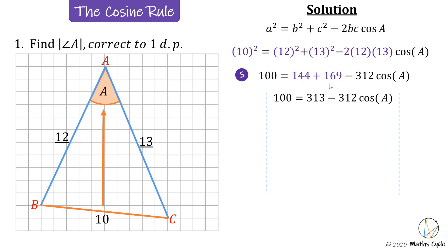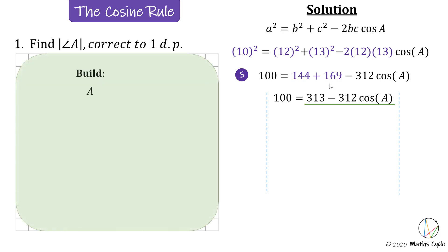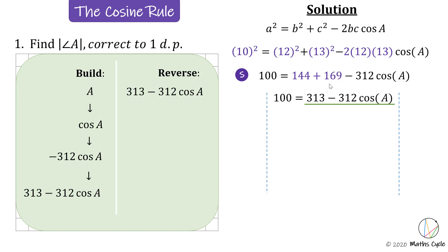Now we need to solve for A. The right-hand side is quite complicated, so we're going to build up what is happening to angle A. Looking at the right-hand side: first we have cosine of A, then cosine A is multiplied by negative 312, and then 313 is added on. Observing this gives us a guideline for how to work backwards.